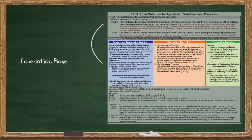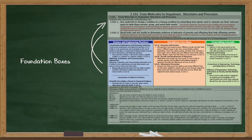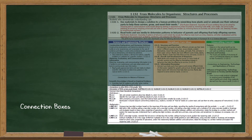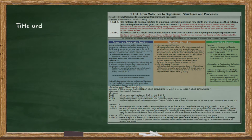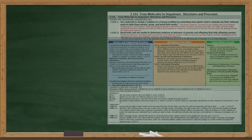In this part, participants learn about the foundation boxes and how the three dimensions are related to each PE, the connection boxes, the title and numbering code system for the tables, as well as the clarification statements and the assessment boundaries for PEs.